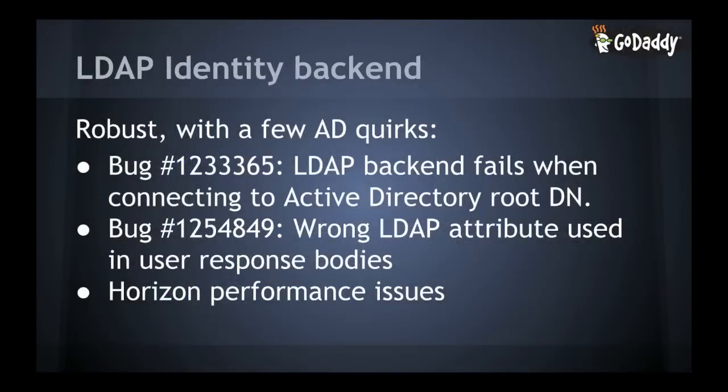Integrating the Keystone identity backend with Active Directory went pretty smoothly — there were really just a couple of bugs that slowed us down. The first one was the only showstopper: we needed to search from the root DN of our Active Directory tree, which didn't work well with how Keystone was written. The fix for that is upstreamed, and the backport to Havana is in process. The second bug was that we had to configure Keystone with SAM account name as both the user ID and username, but when you did a user get, regardless of how you had the user ID attribute configured, you'd get the CN back instead.